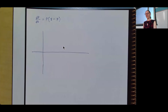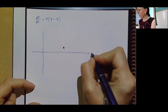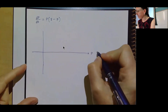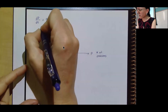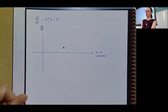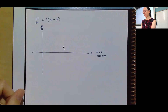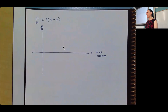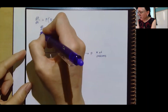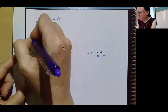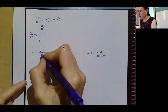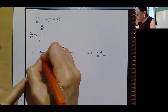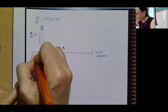I am going to label my axes strangely. This horizontal axis is going to be p — the number of possums in my population — and this vertical axis is going to be dp/dt, how my population is changing over time. If dp/dt is positive, we are in the upper half of the graph, meaning the derivative is positive. Everywhere below the horizontal axis, the derivative is negative.